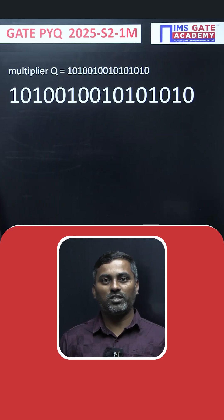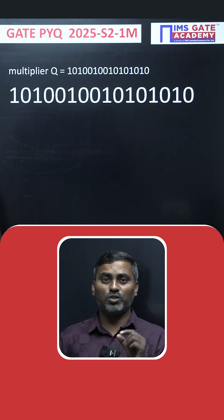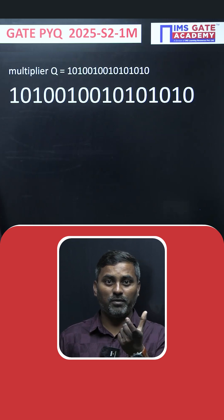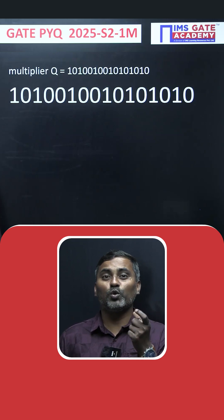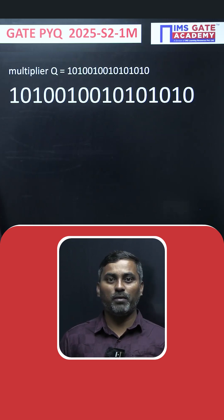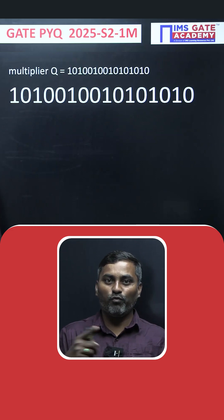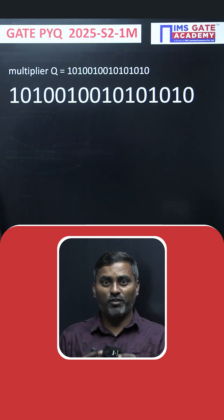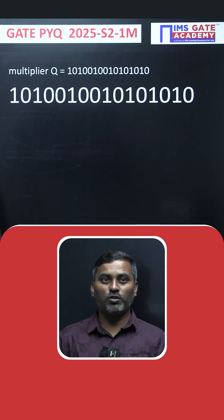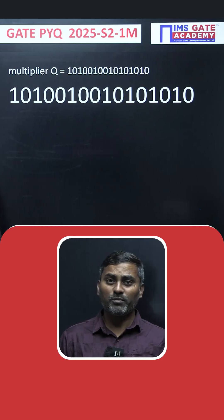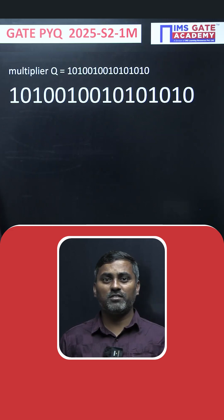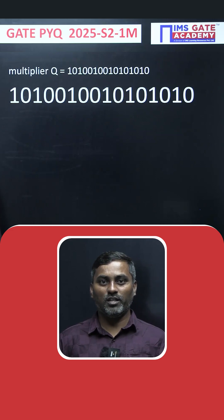There are two types of blocks: a complete block and a partial block. If the leftmost consecutive ones are present in the multiplier number, that becomes a partial block. Observing right to left: zero followed by one, one followed by zero — that becomes a complete block. Continuing this way, we get six complete blocks and one partial block, since the rightmost bit is one.